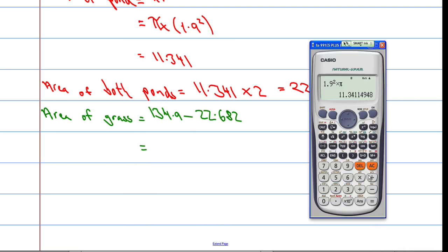So, I'll take out the calculator for this again. 134.9 take away 22.682. 112.218.